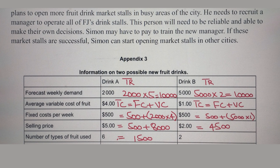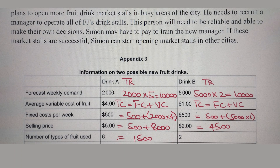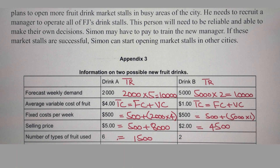Simon wants to produce a new type of drink. He has carried out market research using three methods to help him decide which fruit drink to produce and what price to charge. He has estimated demand, costs, and prices for two possible new drinks as outlined in Appendix 3. Simon plans to open more food and drink market stalls in busy areas of the city, and he needs to recruit a manager to operate all of FJ's drink stalls.